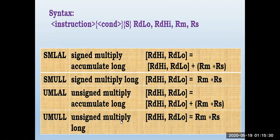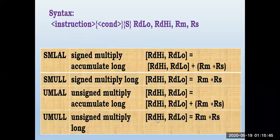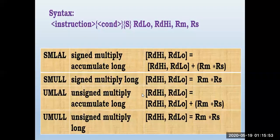UMULL is Unsigned Multiply Long. It multiplies the content of two registers RM and RS. The 64-bit result is split: lower 32-bit value stored in RD low and higher 32-bit value stored in RD high. These are the formats for unsigned and signed long multiplication.